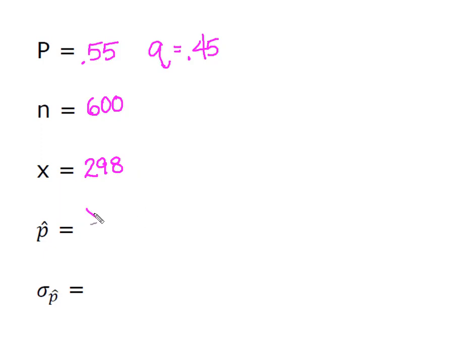This gives us the ability to calculate P hat, which is going to be found by X over N. So 298 out of the 600 gives us a sample proportion of 0.497.